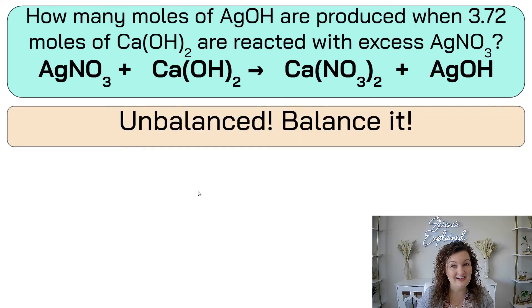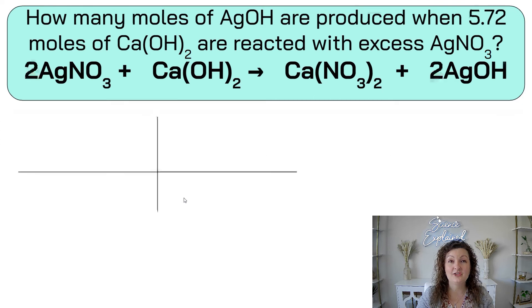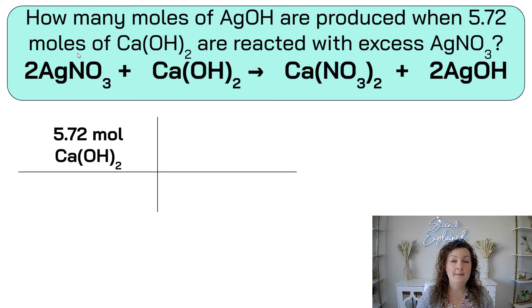All right, let's go ahead and look at the answer. So first, is it balanced? It is not. And this was a pretty simple one to balance though, right? We only needed a 2 in front of the AgNO3 and a 2 in front of the AgOH. Now we can take that balanced chemical equation and solve our bridge. So start with what you know. 5.72 moles of the Ca(OH)2, which means diagonal down has to be moles of Ca(OH)2. So we look for that, and that is right here. We have nothing in front, which means it's an understood 1.